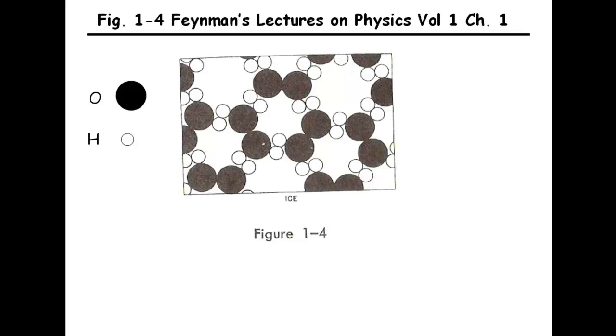This is figure 1-4 of Feynman's Lectures in Physics, Volume 1, Chapter 1. Feynman's intention here is to illustrate the hexagonal symmetry of ice using this two-dimensional representation.